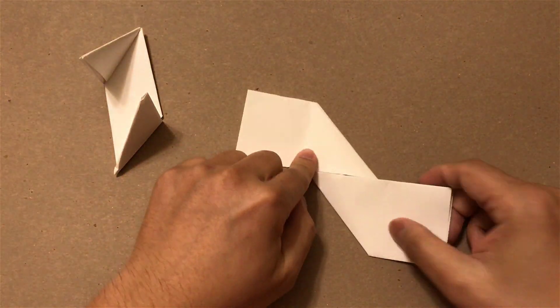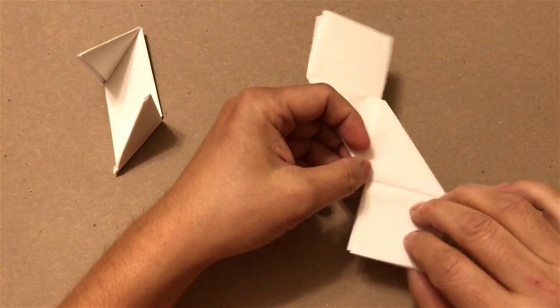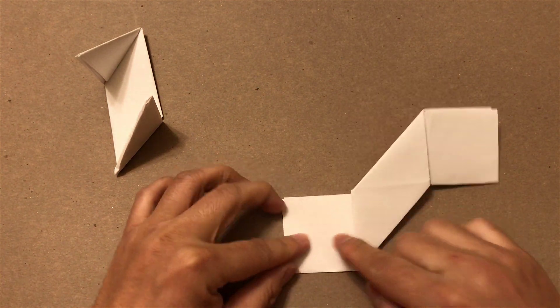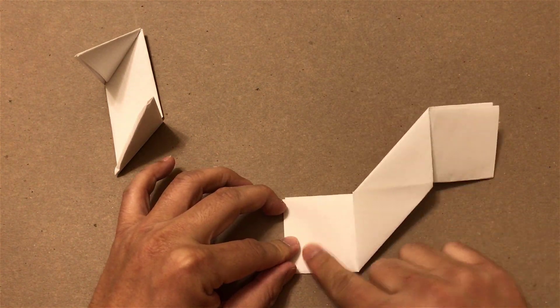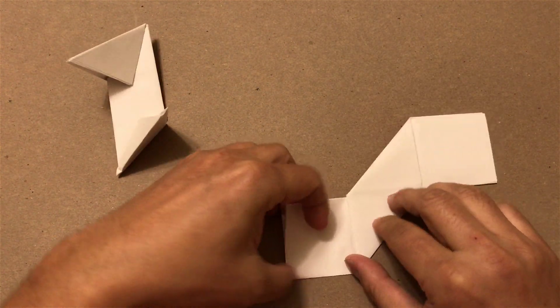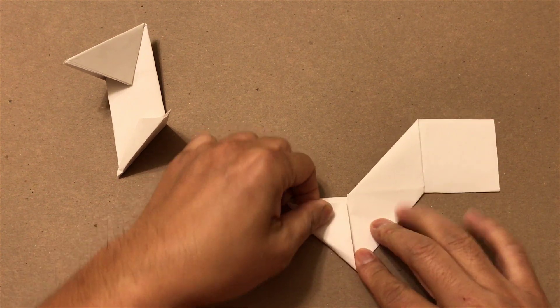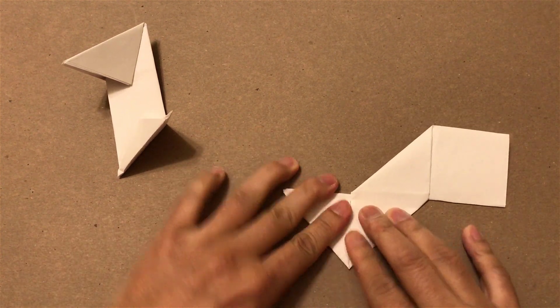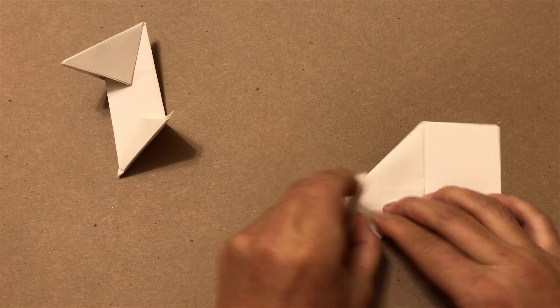So for this one, you also do the same, flip it around, and you want to fold it in, so you can fold it over here, so you make a triangle, and then you fold it inside.